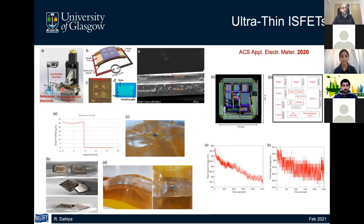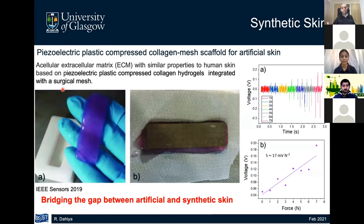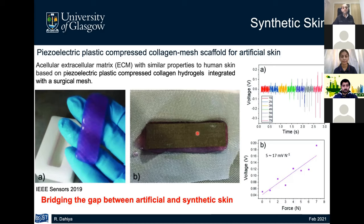One final example is extending electronic skin research toward a truly human-like or synthetic skin: we introduced piezoelectric material into a plastic-compressed collagen mesh scaffold. This is still a work in progress with preliminary results. If successful, it could have implications for skin grafting and for neural interfaces between electronics and the body — for example, feeding signals from an artificial hand into the neural circuits of an amputee, which requires effective neural interfaces.